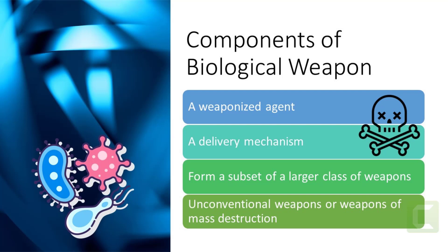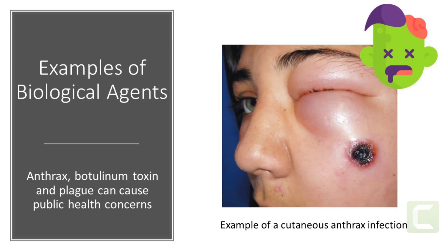The use of biological agents is a serious concern, and the risk of using these agents in a terrorist attack is thought to be increasing in an increasingly geopolitical world with rising tensions. Biological agents like anthrax, botulinum toxin, and plague can pose a difficult public health challenge, causing large numbers of deaths in a short amount of time.